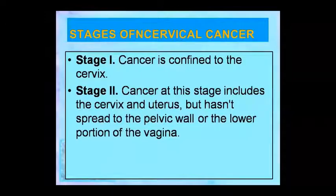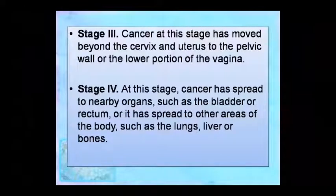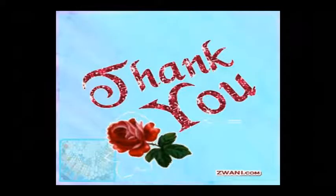Now look at the pathophysiology chart showing the stages of cervical cancer. There are 4 stages. Stage 1: cancer is confined to the cervix. Stage 2: cancer extends beyond the cervix and uterus but not to the pelvic wall. Stage 3: cancer extends to the pelvic wall. Stage 4: cancer spreads to adjacent organs such as the bladder and rectum, and to distant areas of the body including the lungs, liver, and bones.